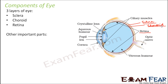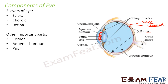Besides the three layers of the eye we have other important parts as well. Cornea — it is this front portion of the eye which is the white visible portion of the eye. Next is aqueous humor — it is the portion between cornea and the lens, filled with a fluid which is called aqueous humor.